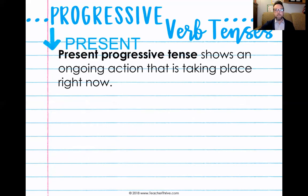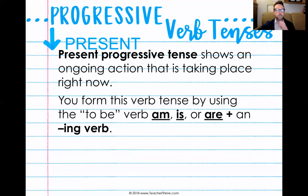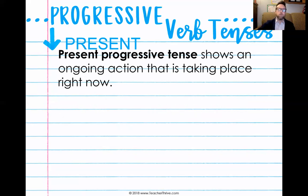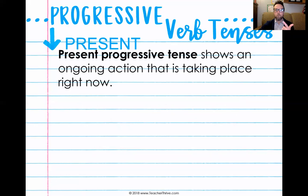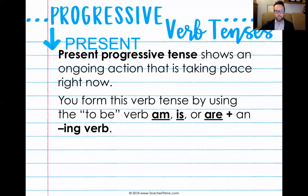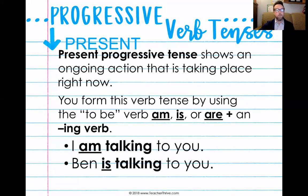Present progressive shows an ongoing action that is taking place right now. We recognize present progressive by using the present form of the verb to be — am, is, or are — plus an -ing verb. So: 'I am talking to you,' 'Ben is talking to you.' This is something that is happening right now. Right now we are experiencing a present progressive because I am sitting here talking to you.